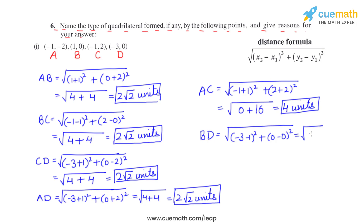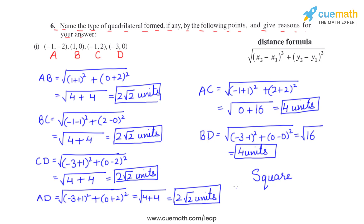BD also equals square root of 16, which is 4 units. All four sides are equal and both diagonals are equal — AB = BC = CD = AD and diagonal AC = BD. Therefore, the vertices in the first part form a square.